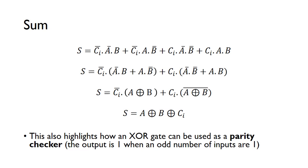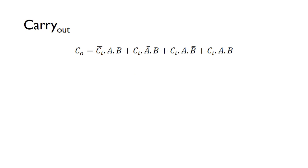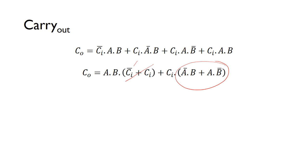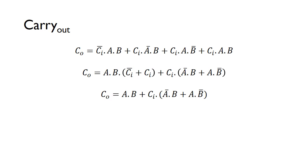Now we look at the carry-out using a similar approach, looking for common factors. For example, A and B appear as a common factor in two terms, and then the remaining two terms also share common factors. After factoring, we simplify: A AND B AND one reduces to just A AND B, and the remaining part is recognized as an XOR expression.